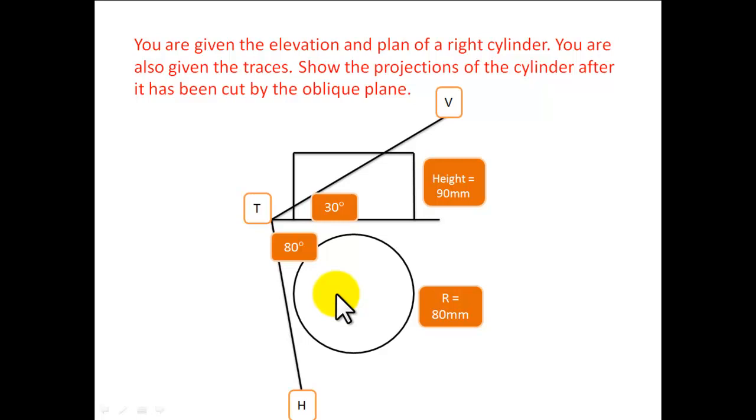So before we do the setup of this question, it is very important to understand that the elevation is the only part of this question that will change. The plan, which is a circle, is straight up, so none of these points or none of this circle can be altered at all. So we will have to go to elevation to find where it is cut.